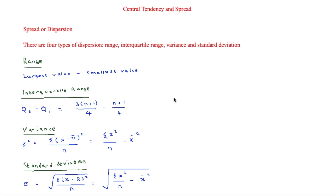Now it's time to look at spread, or dispersion, and there are four types: range, interquartile range, variance, and standard deviation.